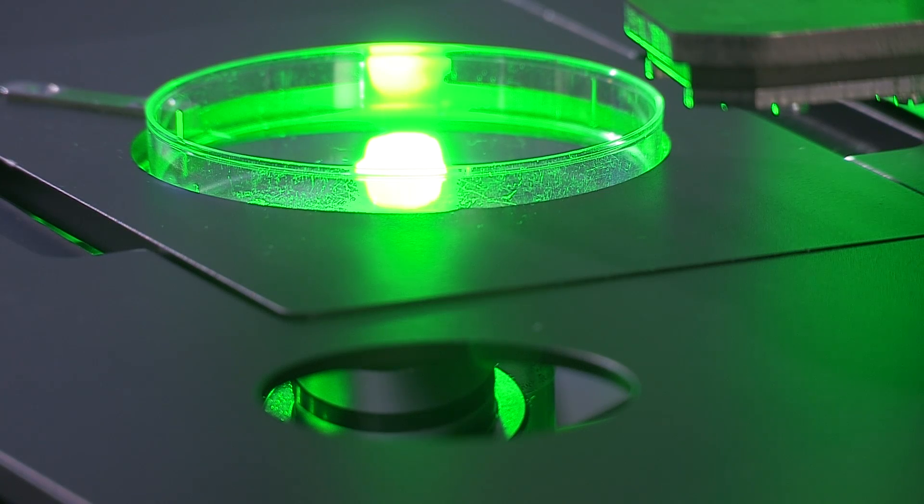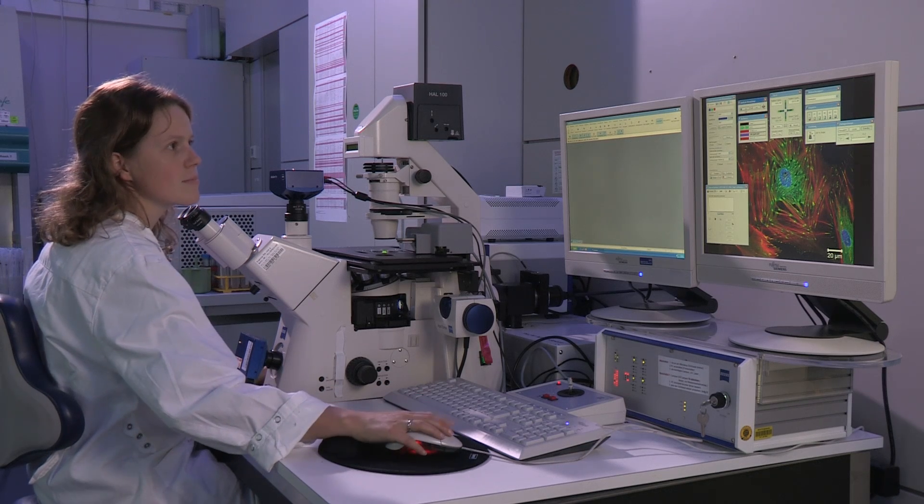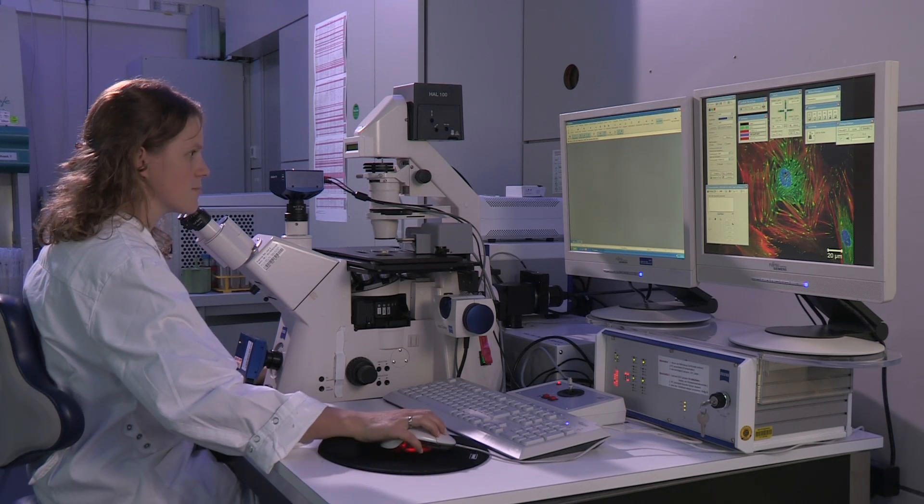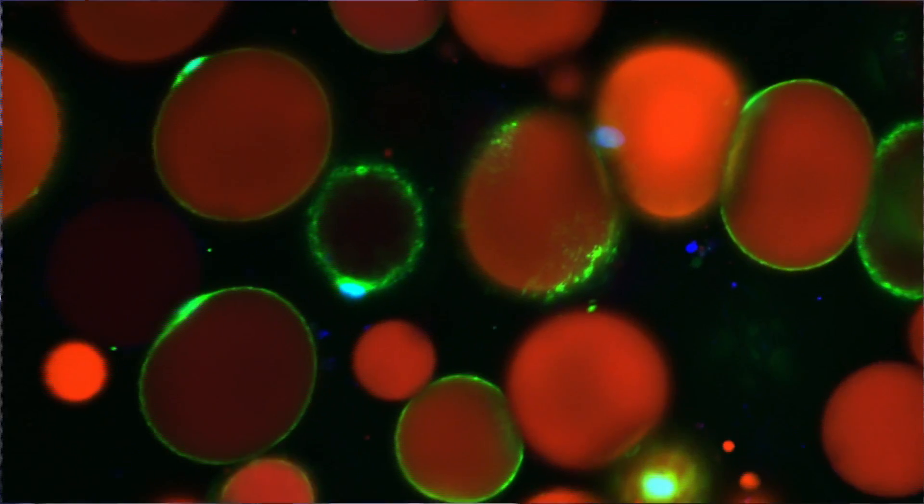The Fraunhofer IGB enables the production of tubular supply systems, which can be used in bioreactors and the assembly of three-dimensional bio-artificial tissues like fatty tissue.